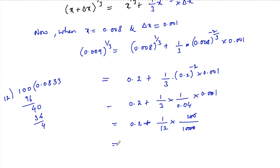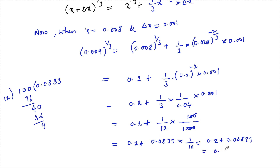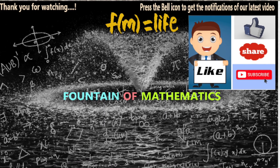So we have 0.2 + (1/12) · (1/10) = 0.2 + 0.00833 = 0.20833. Therefore, up to three decimal places, (0.009)^(1/3) ≈ 0.208.